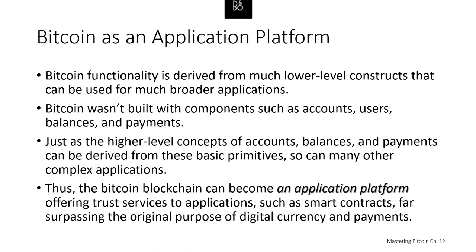The Bitcoin system was designed as a decentralized currency and payment system. However, much of its functionality is derived from lower-level constructs that can be used for much broader applications. Bitcoin wasn't built with components like balances, accounts, users, or payments. Instead, it uses a transactional scripting language with cryptographic functions. Just as higher-level concepts of accounts, balances, and payments can be derived from the basic primitives of transactions, so can many other complicated applications. Therefore, the Bitcoin blockchain can become an application platform offering trust services such as smart contracts, far surpassing the original purpose of digital currency and payments.